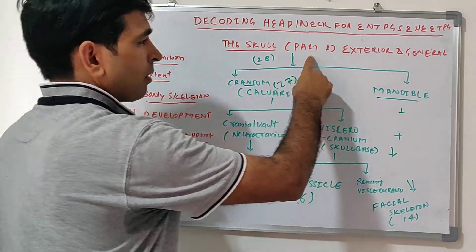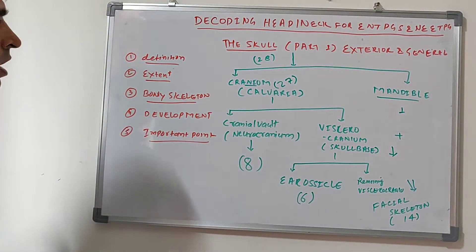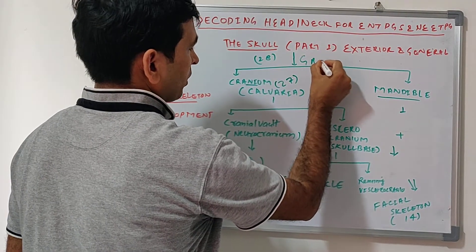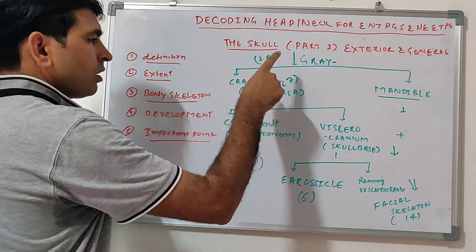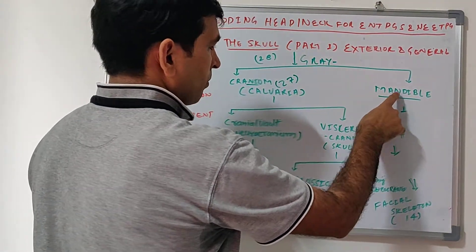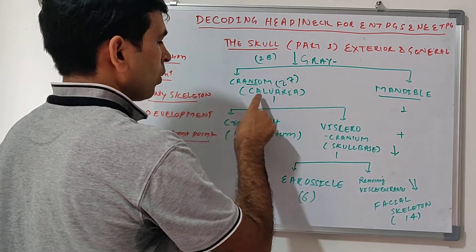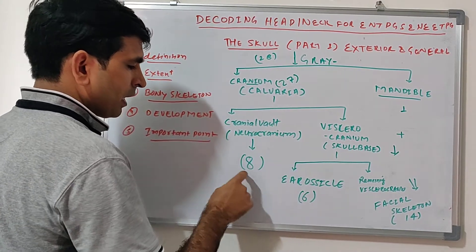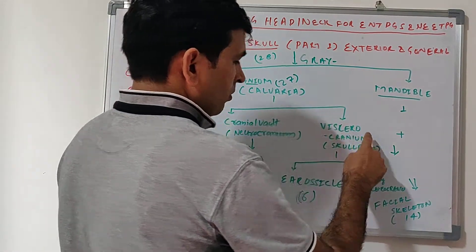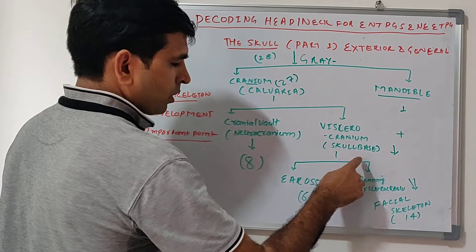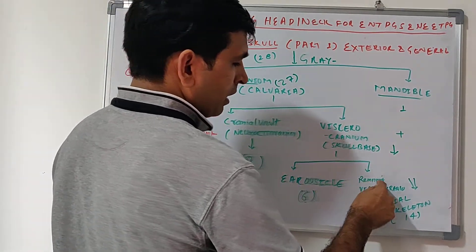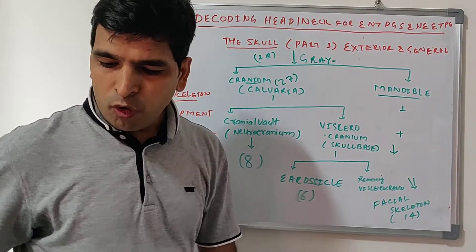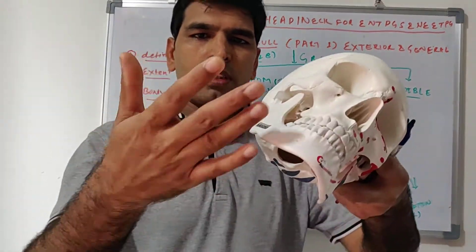In part 1, I am going through the exterior and general part of the skull. The skull is made up of 28 bones according to Gray's Anatomy. These 28 bones are divided into 2 parts: mandible (1) and cranium, also called calvaria. Calvaria is again divided into 2 parts: cranial vault, also called neurocranium, having 8 bones; and viscerocranium, also called skull base.